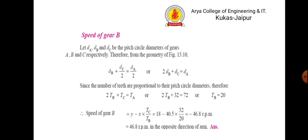For the speed of gear b: from the geometry of the figure, d_b + d_c / 2 = d_a / 2, or 2d_b + d_c = d_a. Since the number of teeth are proportional to the pitch circle diameter, replacing d with t gives the number of teeth on gear b as 20. The speed of gear b from the table is y − x × (t_c / t_b), and substituting values gives 46.8 rpm in the opposite direction.